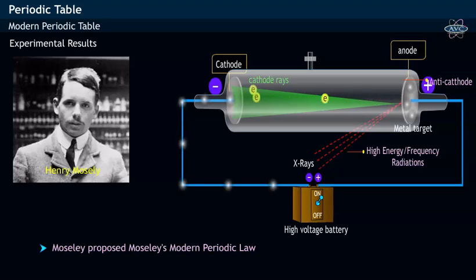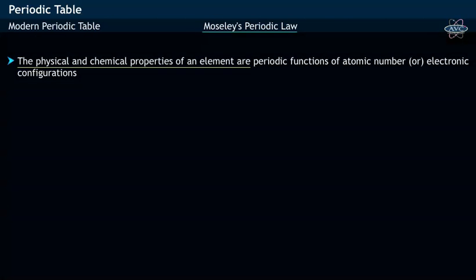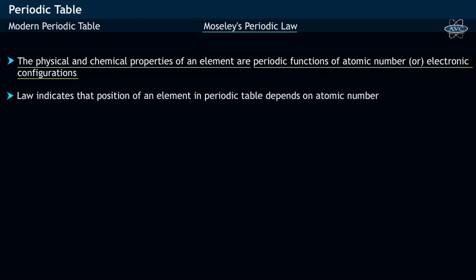Moseley proposed Moseley's periodic law. Moseley's periodic law states that the physical and chemical properties of elements are periodic functions of their atomic numbers or electronic configuration.